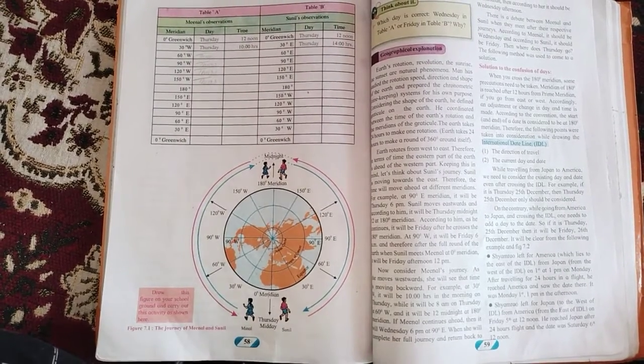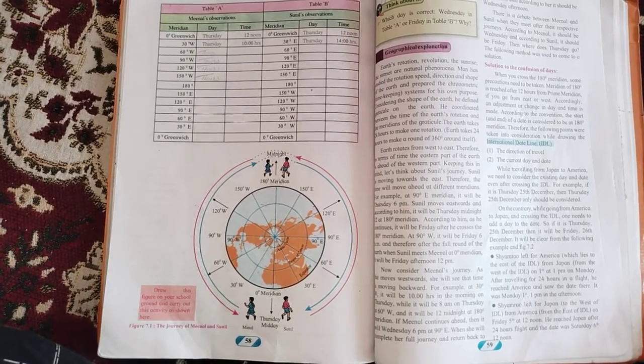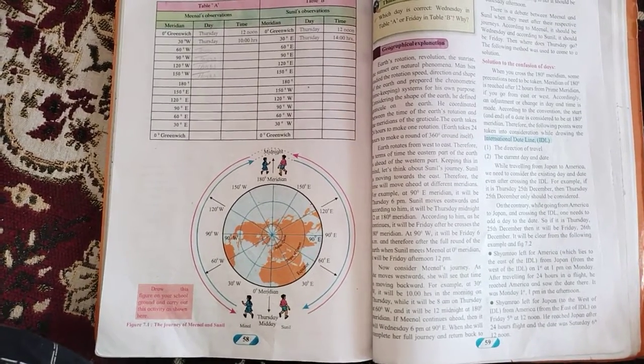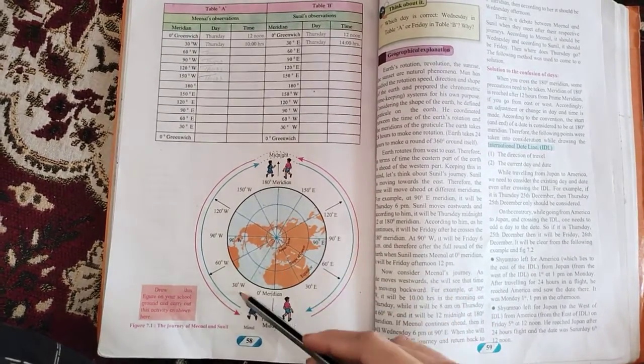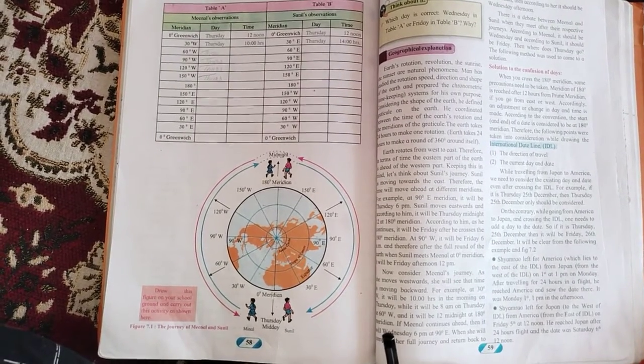When it is Sunday noon on Greenwich, it is just beginning of Sunday to the east of 180 degree meridian, while Sunday is almost over in the west of 180 degree meridian time to east and west of 180 degree meridian.